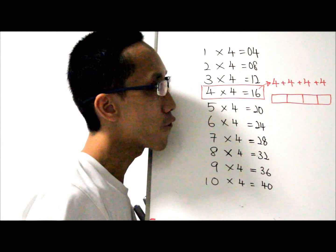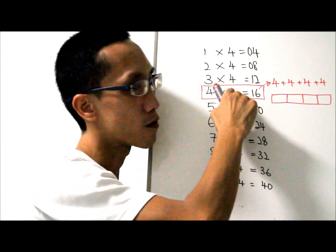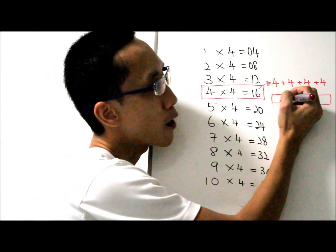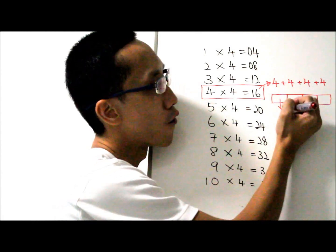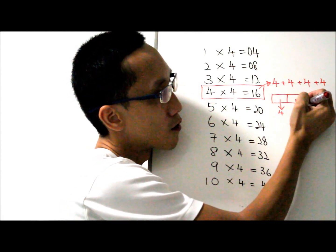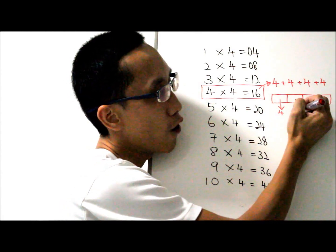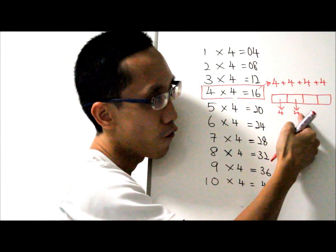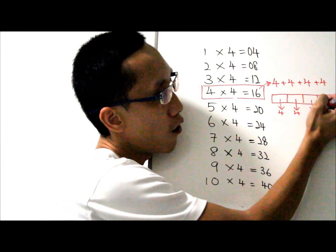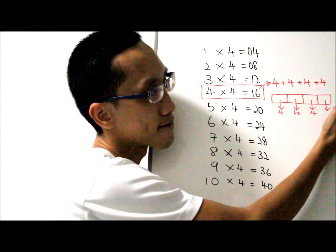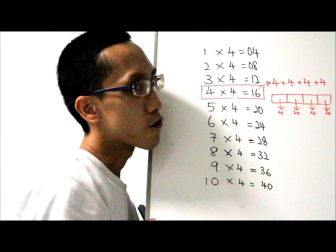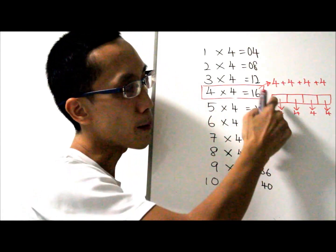Why 4 parts? Because each part will have 4 — 4, 4, 4, and 4. So there are 4 parts and each part will have 4.